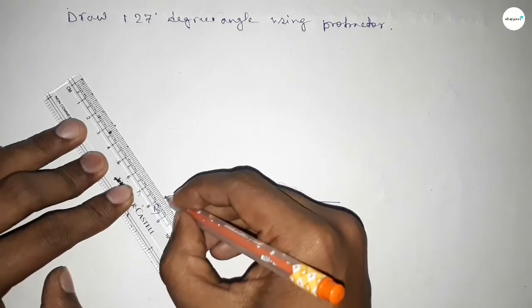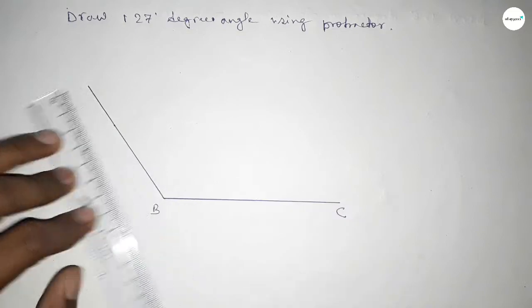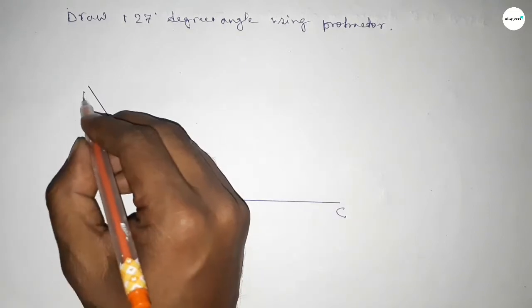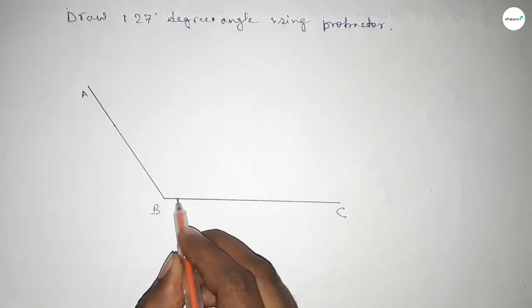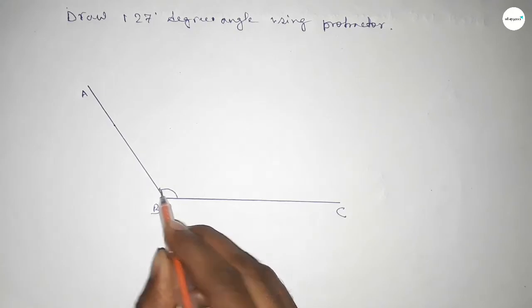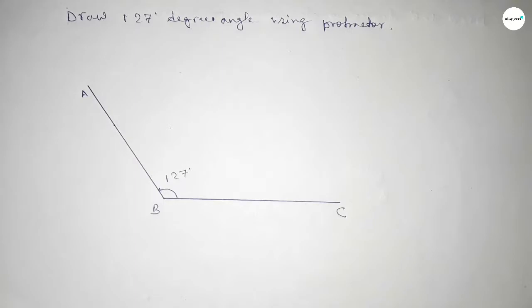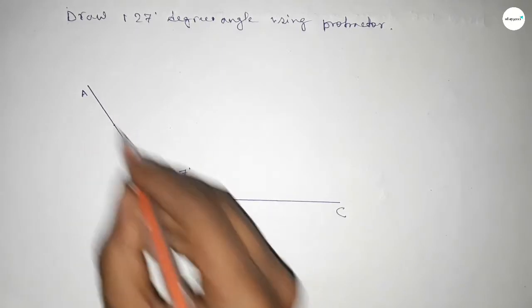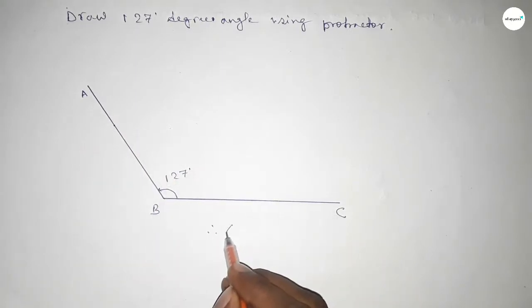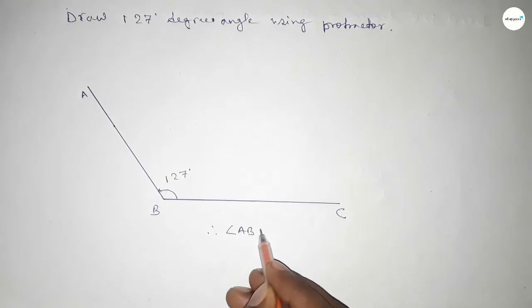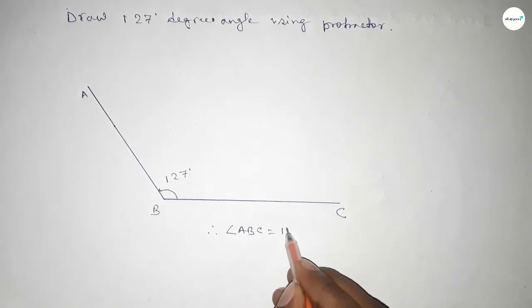Now joining this side to get a 127-degree angle. And now taking here A, so angle ABC... this is a 127-degree angle. So therefore, angle ABC equal to 127 degrees.